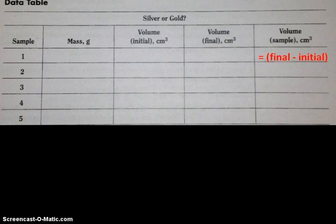To find the volume of each of the five samples in the final column labeled volume of the sample, you will take the final volume and subtract the initial volume and that number will equal the sample volume.